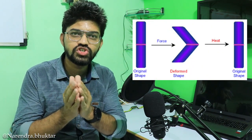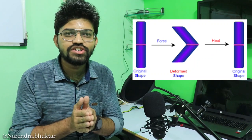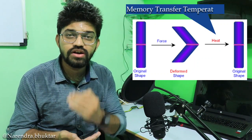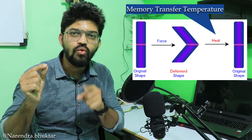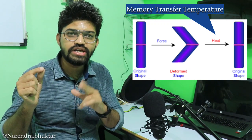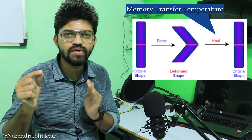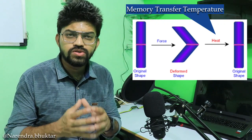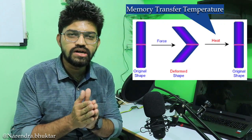The temperature at which a particular wire regains its original or previous shape is known as the memory transfer temperature. At that particular temperature, the metal wire will regain its original shape before deformation.